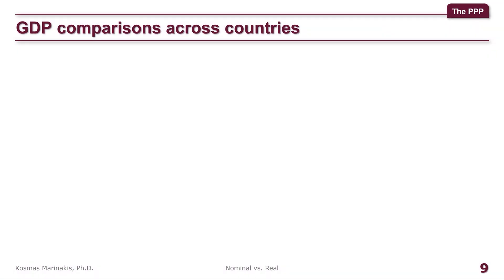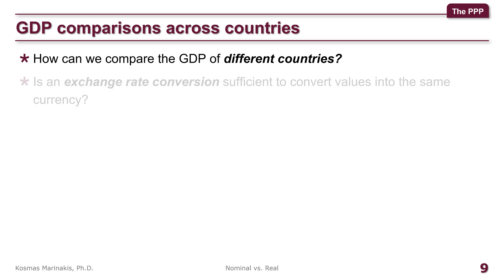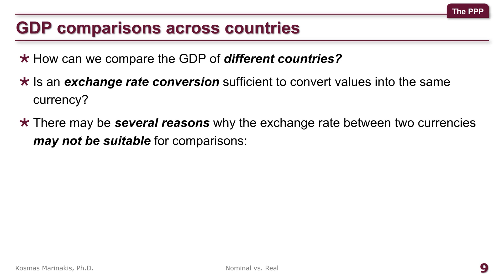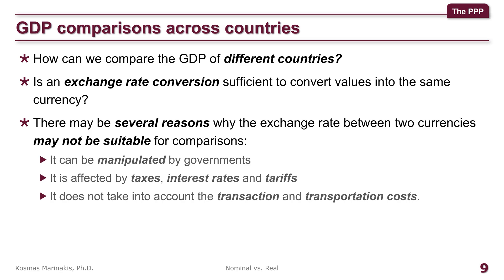Okay, with the GDP comparisons across time covered — what if we want to compare the GDP of the same year but across different countries? The main issue here is that the values in the two countries will be counted in different currencies. So, is an exchange rate conversion sufficient to convert values into the same currency? There may be several reasons why the exchange rate between two currencies may not be suitable for comparisons. First, the exchange rates are routinely manipulated by the monetary authorities in every country. Second, it will be affected by taxes, interest rates, and trade tariffs. And third, the exchange rate does not take into account the transaction and transportation costs when consuming goods that are produced in another country.